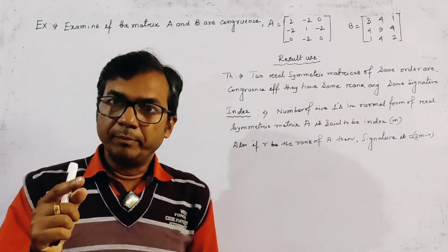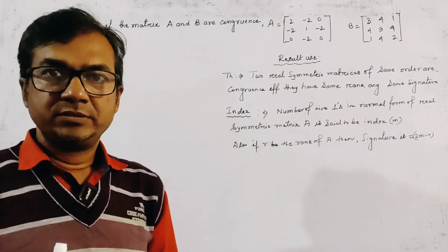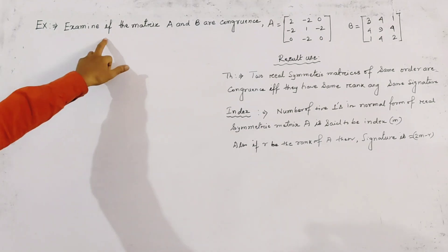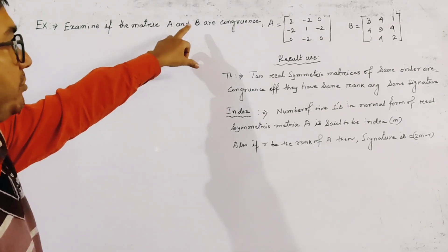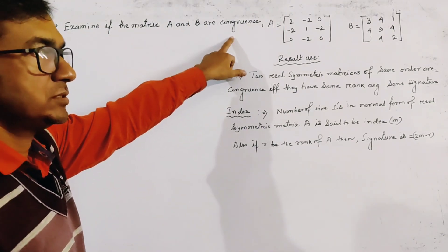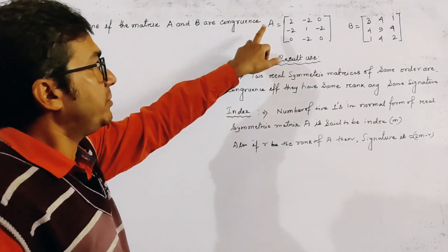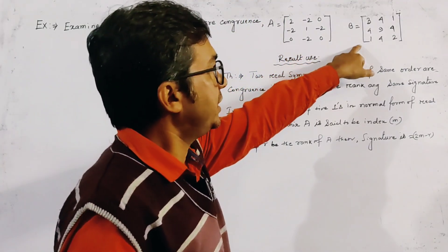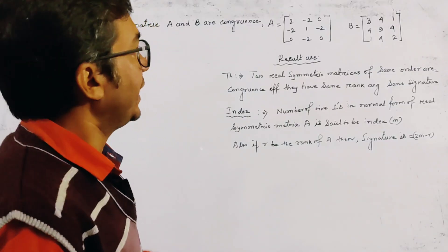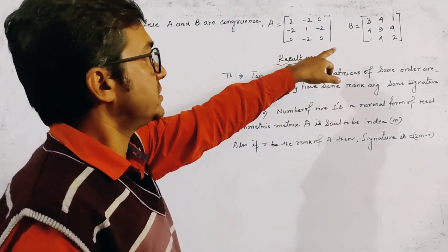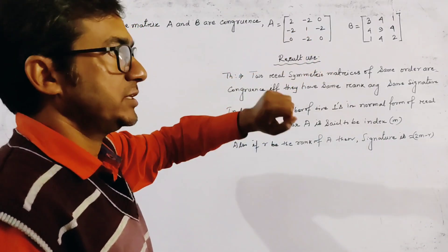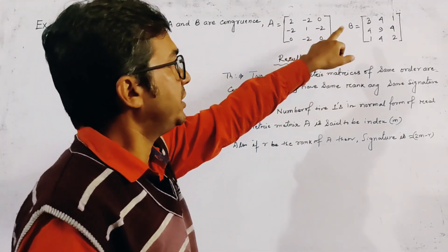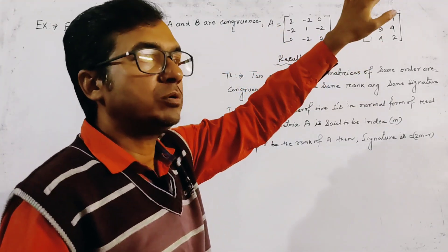Today's problem is from matrices, and the problem is to examine if matrices A and B are congruent. Two matrices are given: A and B. Clearly, these two matrices are real and symmetric because A transpose equals A, and B transpose equals B.